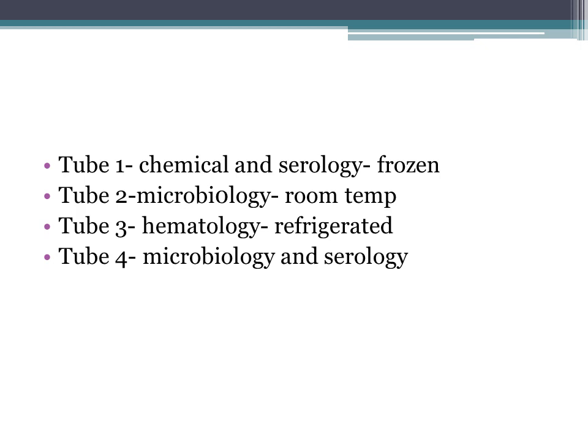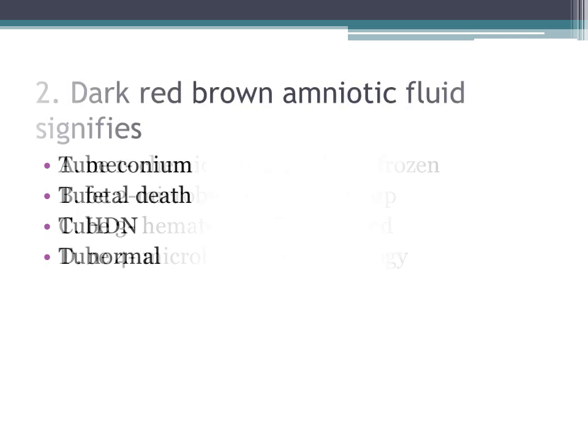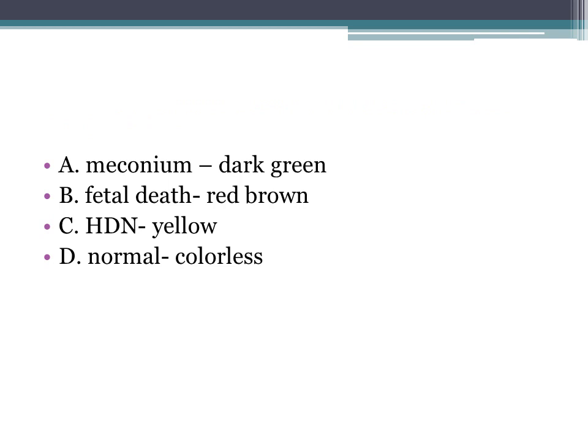Tube four — recall board exam — is for microbiology and serology. Number two: dark red-brown amniotic fluid signifies A. meconium, B. fetal death, C. HDN, D. normal. The correct answer is B, fetal death. Meconium is dark green. Fetal death is red-brown. HDN (hemolytic disease of the newborn) is yellow. Normal amniotic fluid is colorless.